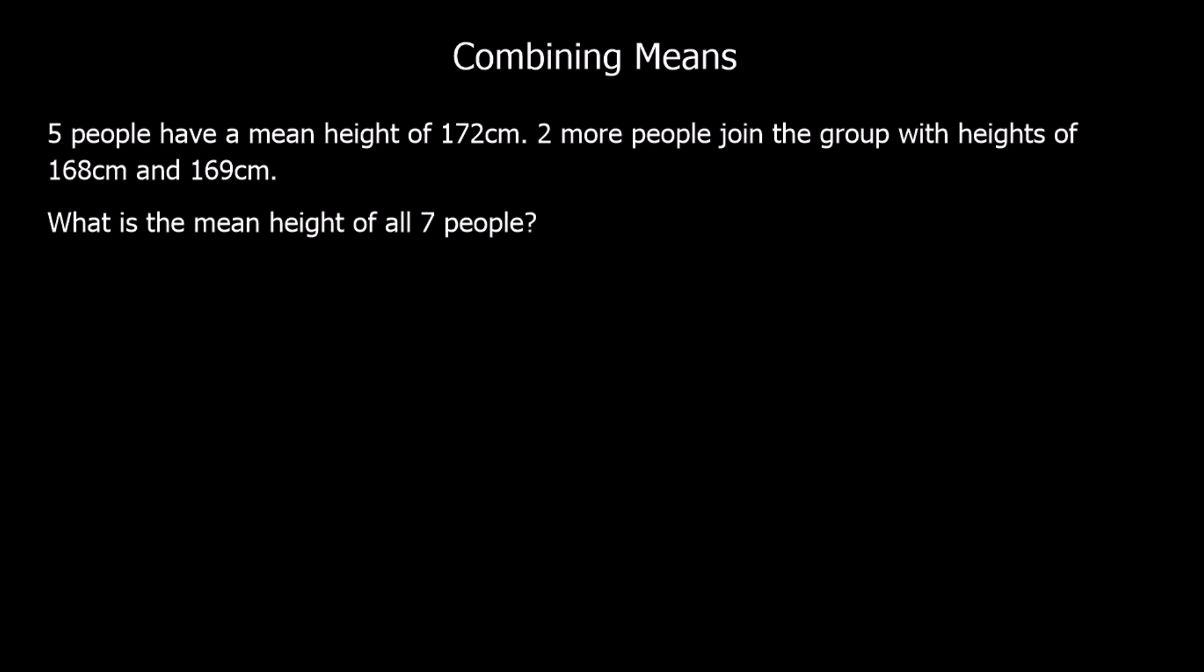Here's a different question. We've got five people with a mean height of 172 centimeters. And two more people join with heights of 168 and 169 centimeters. So the mean is going to be everything added up, divided by how many? So there are seven people in total.